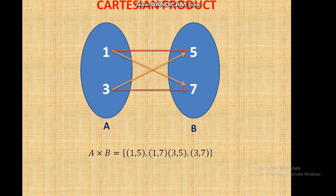Cross product: Set A contains two elements 1 and 3, and set B contains two elements 5 and 7. The cross product of set A and B is denoted by A × B and defined by (x, y) as the ordered pair where x belongs to A and y belongs to B.